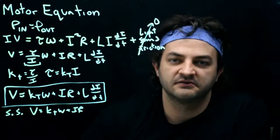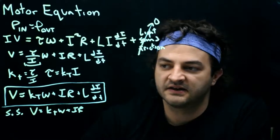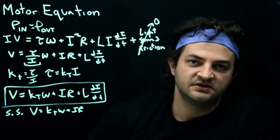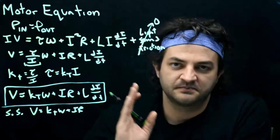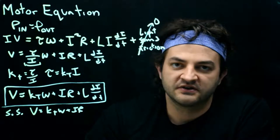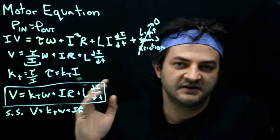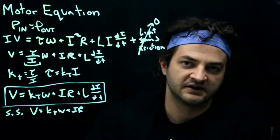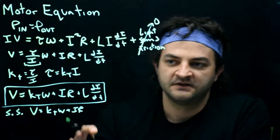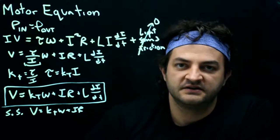So at steady state, this boils down to V equals kT omega plus IR. We're basically getting rid of the inductance term by saying that let's not be accelerating or decelerating. Let's just pretend we're at constant current. We've been running the motor for a long time. It's hit a steady state. It's no longer accelerating or decelerating. So we can throw away the DI-D-T term.